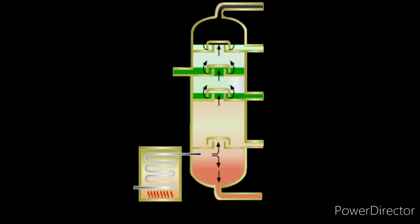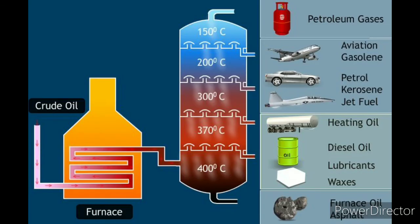At those lower outlets, the high boiling components are separated. The low boiling components move upward and condense in the upper part of the tower, where they are also separated. The uncondensed fraction passes out as gas, and this gas is called petroleum gas.